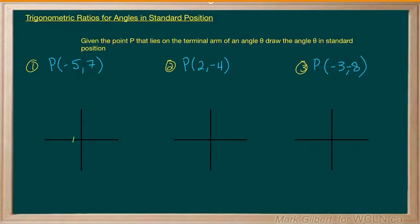Now I'm not going to scale off my axes, but I could easily scale this: negative 1, 2, 3, 4, 5, and then 1, 2, 3, 4, 5, 6, 7. I'm really only looking for the quadrant that this point is in. So here's the point P at negative 5, 7, where negative 5 is the x value and 7 is the y value. So I make my terminal arm with the origin like that, and here is my angle theta in standard position.